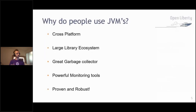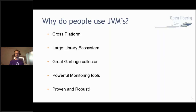Why do people use Java at all? First, it's cross-platform — write once, run anywhere. It has a very large ecosystem and library, because Java has been around for about 27 years. It has a great garbage collector which handles a lot of things developers don't want to care about, great monitoring tools, and it is proven and robust — used by the biggest enterprises in the world and still in use today. Hopefully Java will be around for another 27 years to come.